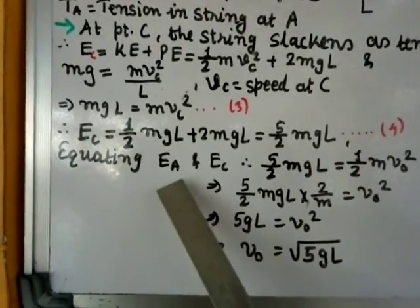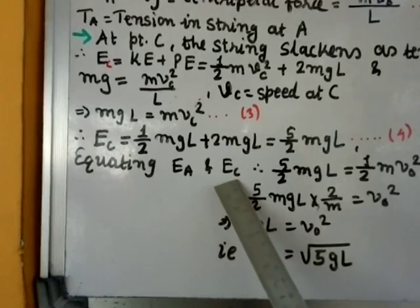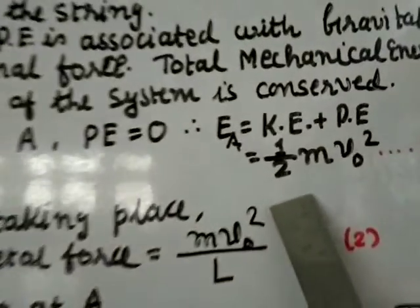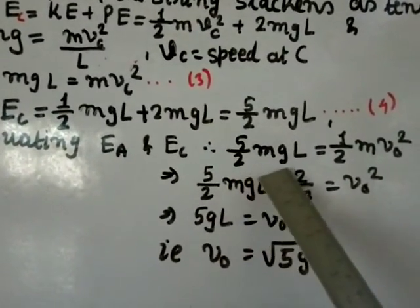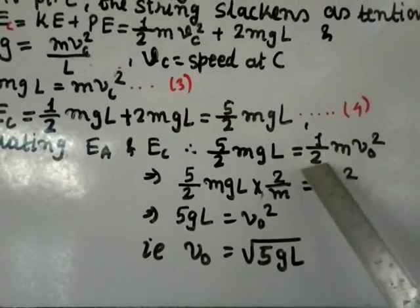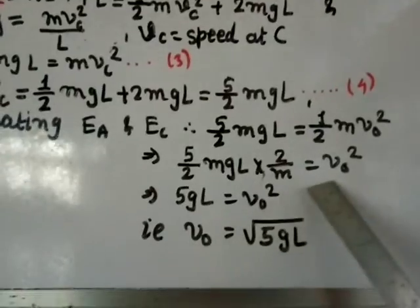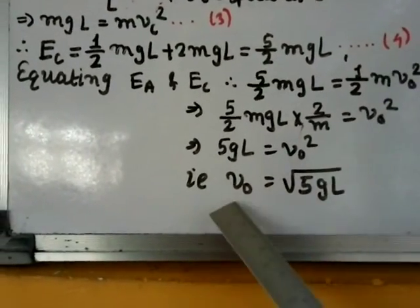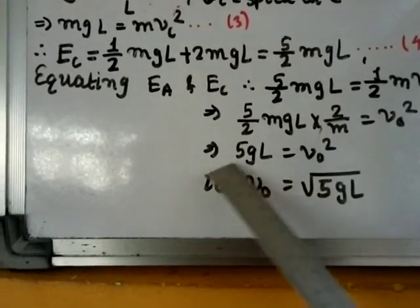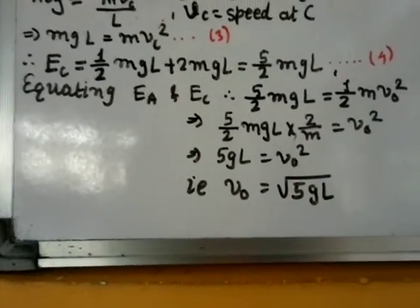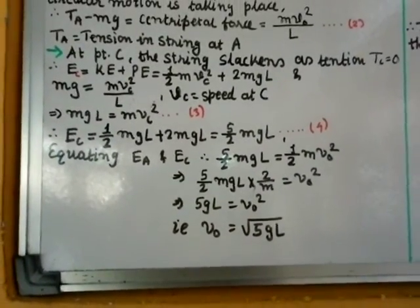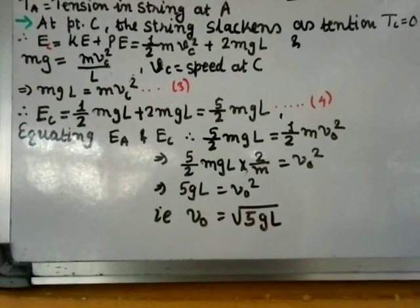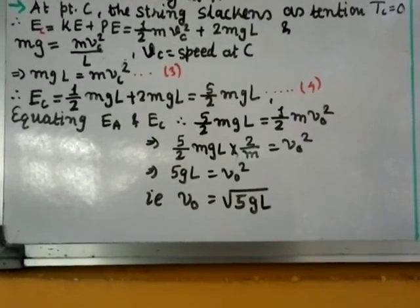Equating E_A and E_C: ½mv₀² = (5/2)mgL. Cancelling m and simplifying: v₀² = 5gL. Taking the square root: v₀ = √(5gL). This is the velocity at the lowest point A, where g is acceleration due to gravity and L is the length of the string.